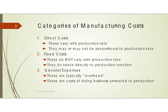There are three categories of manufacturing costs. The first are direct costs — these vary directly with the production rate, so if the production rate goes up, this cost will go up. We also have fixed costs, which do not vary with production rate; they remain the same whether you make one ounce or one million tons. And then we have general expenses, which we call overhead — costs of doing business that are only remotely related to actual production.